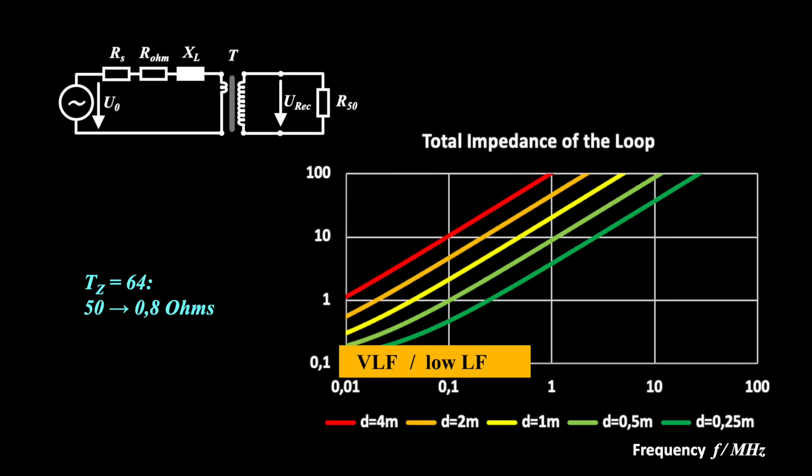If you want to receive lower frequencies, use a larger loop. For higher frequencies, use a smaller one. With a smaller transformation ratio, you are getting an impedance matching at higher frequencies.